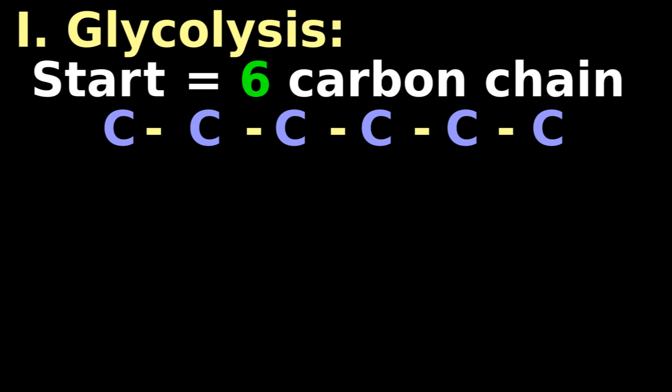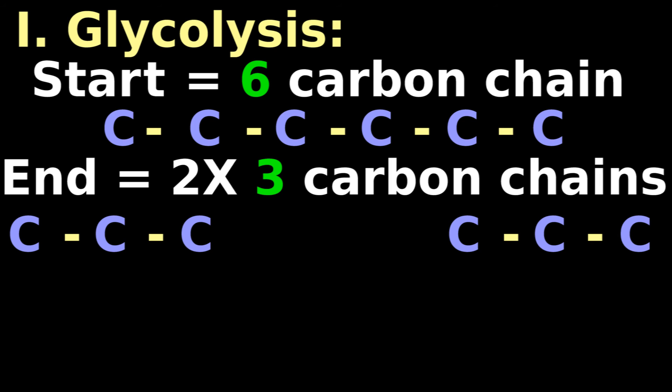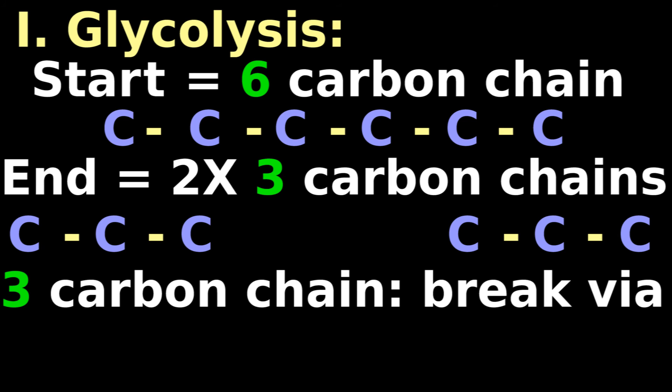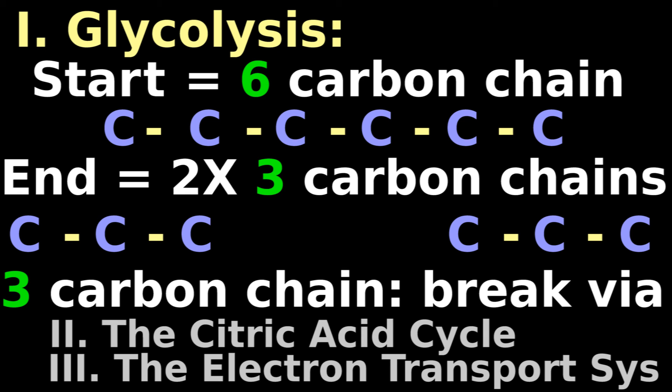Glycolysis starts with a single six-carbon chain and ends with a pair of three-carbon chains. These three-carbon chains are further broken down to slowly release energy in the citric acid cycle and the electron transport system.